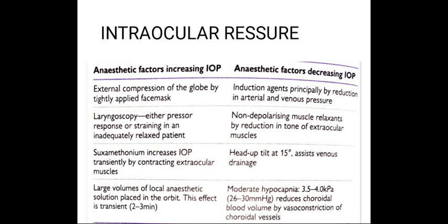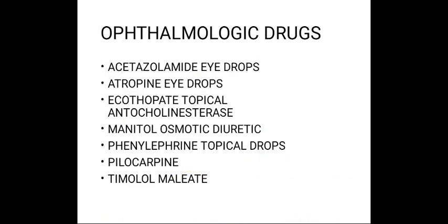Anesthetic factors that decrease IOP include induction agents — which reduce arterial and venous pressure — non-depolarizing muscle relaxants by reduction in tone of the extraocular muscles, head-up tilt by 15 degrees to assist venous drainage, and moderate hypocapnia of 26 to 30 mmHg, which reduces choroidal blood volume by vasoconstriction of choroidal vessels.